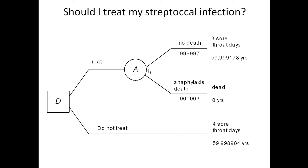Sometimes people take exception to this — if the treatment could cause me to die, I certainly wouldn't do it. But that's not really true. We ignore events that have very small probability all the time. When you get in your car and drive to work, there's a very small probability of getting in an accident. When you take an airplane, there's a very small probability the plane will crash. So you do make decisions to do things which are more likely to cause death than if you didn't do them. This is just formally modeling something we do all the time.